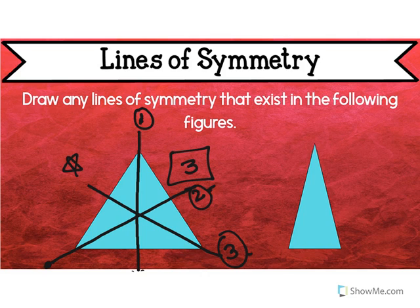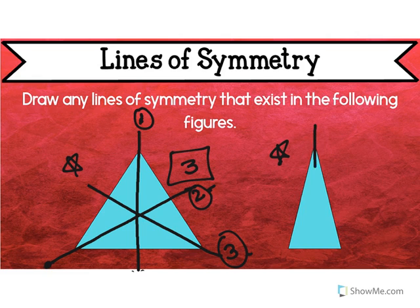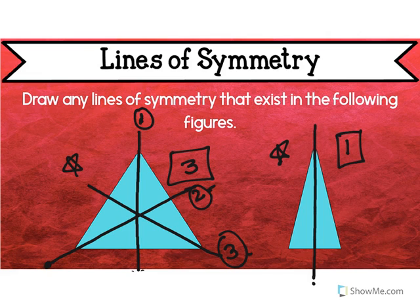Last one — find the lines of symmetry for this triangle. Would this one work? No. Would diagonal work? No. Would this diagonal work? No. But what about this? Yes, it does work. So it has one line of symmetry because I drew one line. Even though there's a point here and a point here, it still counts as just one line — it's like a line segment in a way.